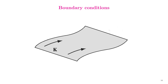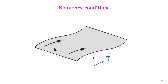Let us assume that we have placed a surface having a surface current density k in a homogeneous media. Let us assume that a magnetic field is traversing the sheet carrying the surface current density k. Below the sheet, let us assume that the magnetic field is oriented like this. We may resolve the magnetic field into two components: a parallel component and a perpendicular component. We may denote the parallel component as B parallel below, and the perpendicular component as B perpendicular below.